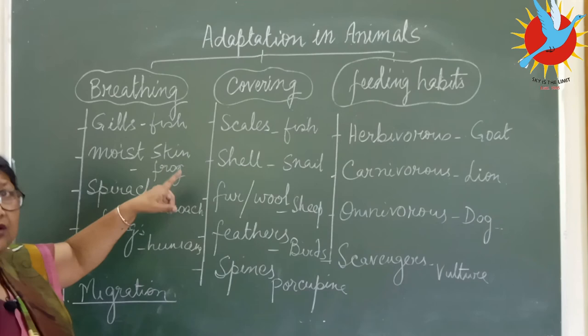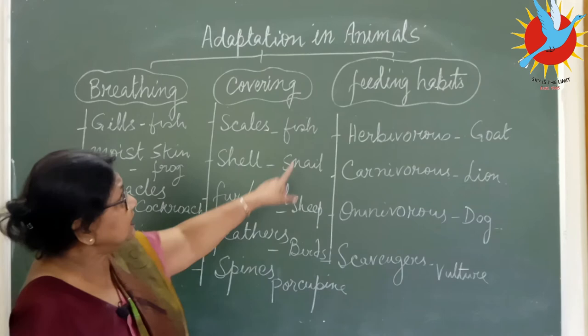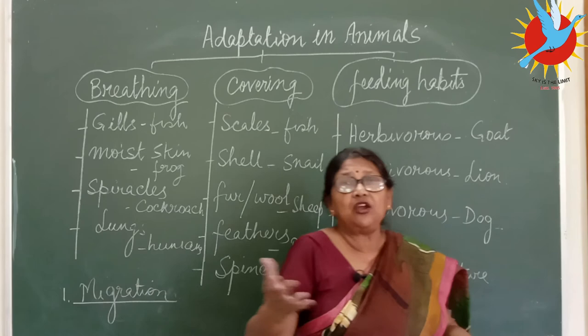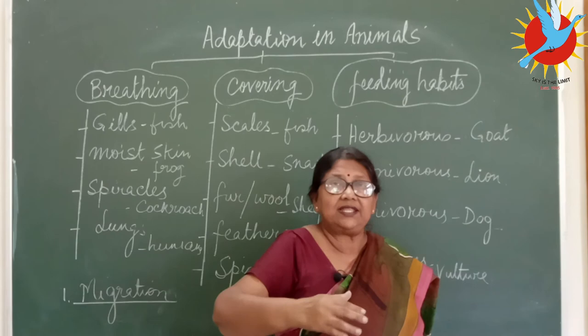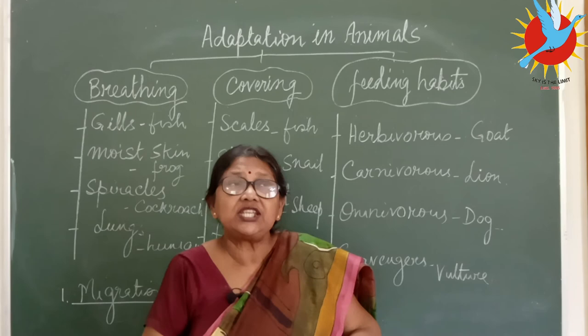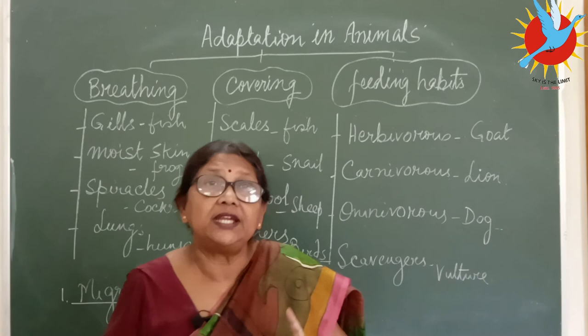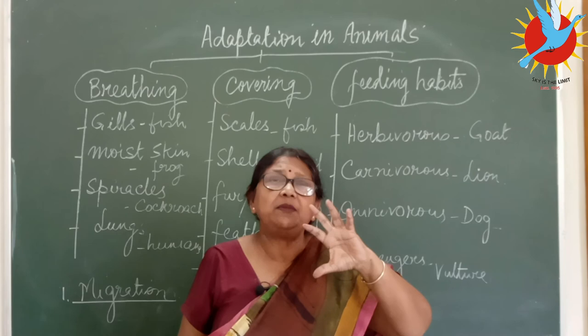These are the three main reasons for adaptation: breathing, body covering, and feeding habits. One more topic in this chapter is migration. Like relatives who were born in India but moved abroad — migration means mass movement from one place to another. In animals, migration is mainly for food, shelter, and reproduction or breeding, and is especially seen in animals of very cold countries.